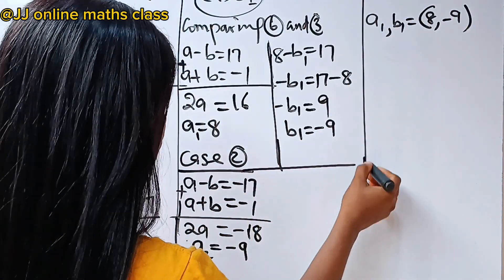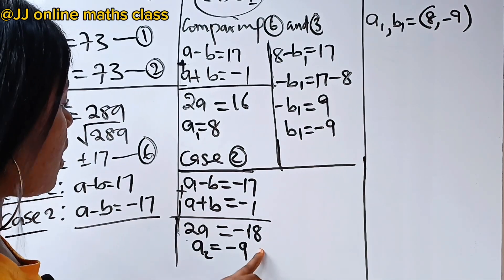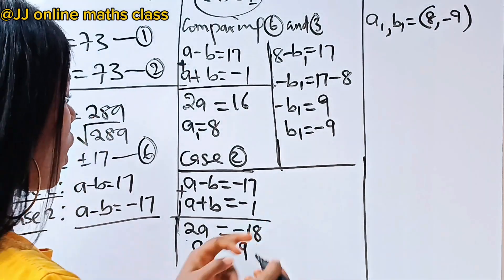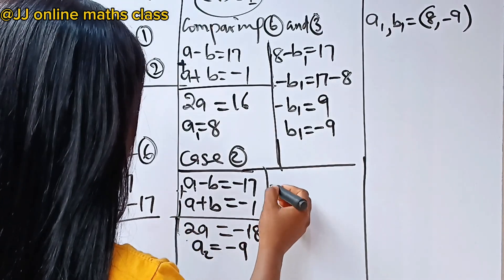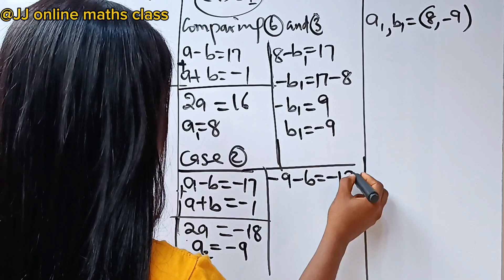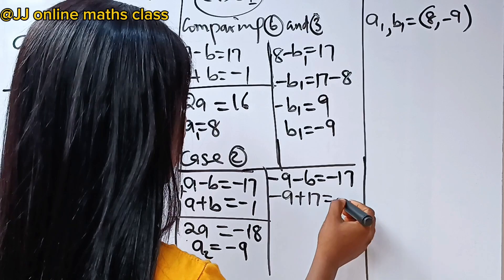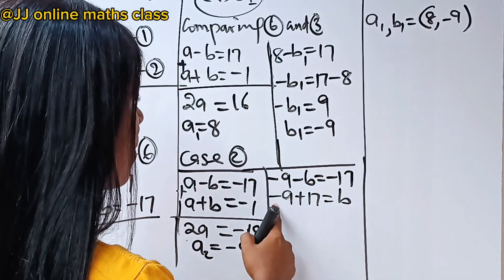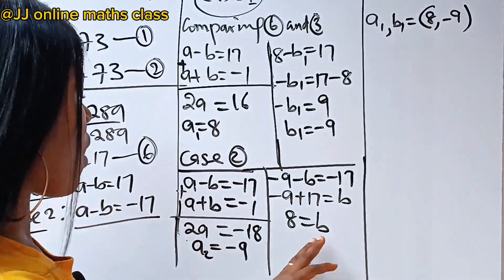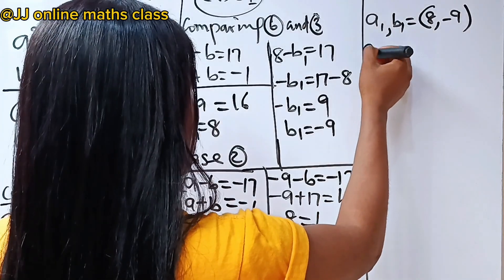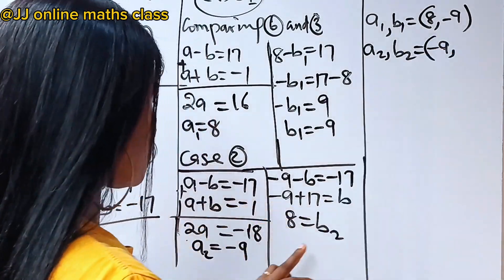For case 2, our a2 is minus 9. Substituting into a minus b equals minus 17: minus 9 minus b equals minus 17, so b equals minus 9 plus 17, which gives b2 equals 8. So the second solution is a2 equals minus 9, b2 equals 8.